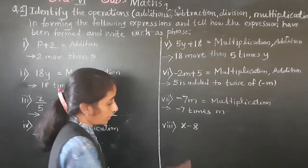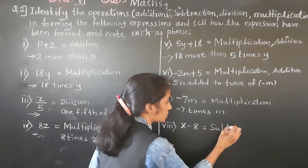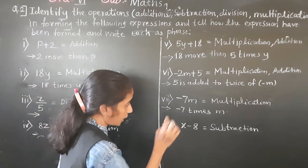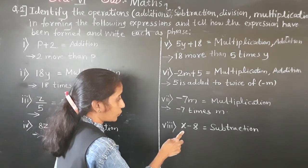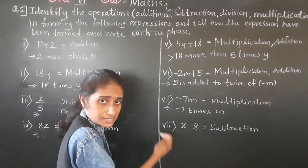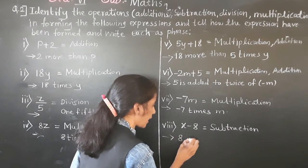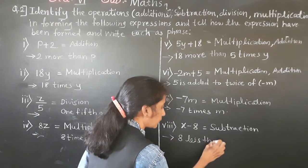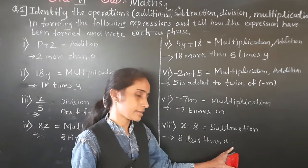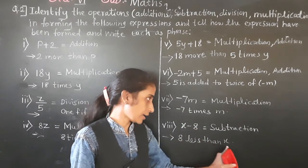x minus 8: the operation here is subtraction. For subtraction, 'less than' is used. x minus 8 means 8 is less than x. So the phrase is: '8 less than x.'